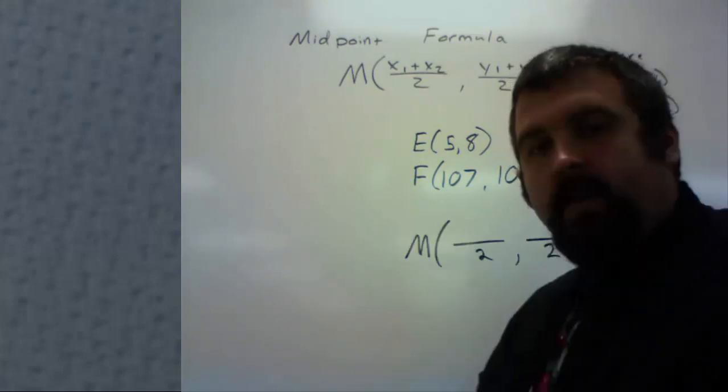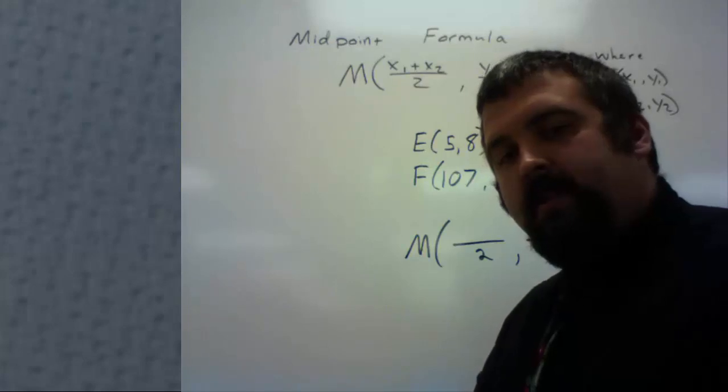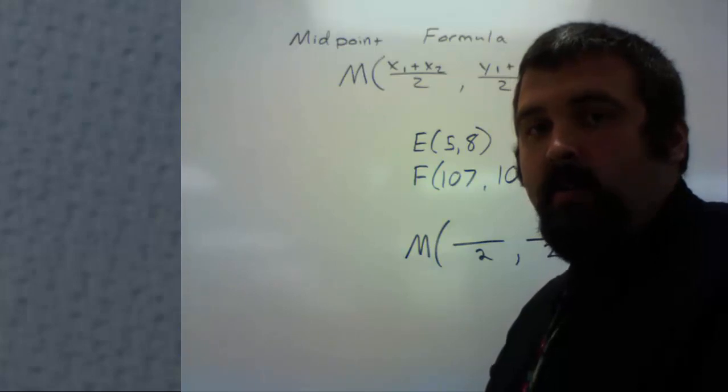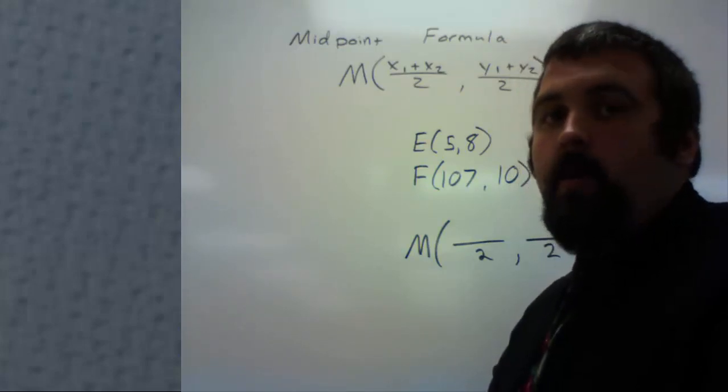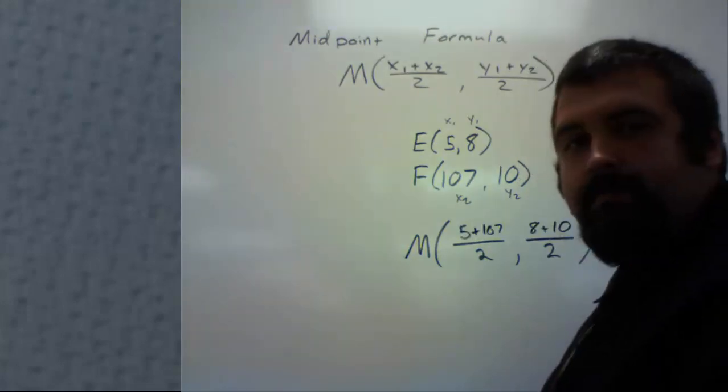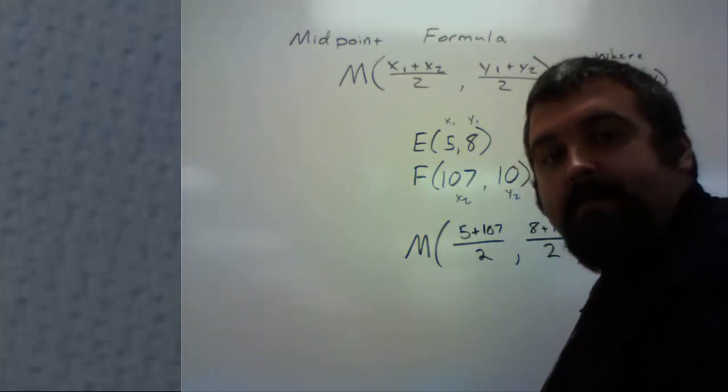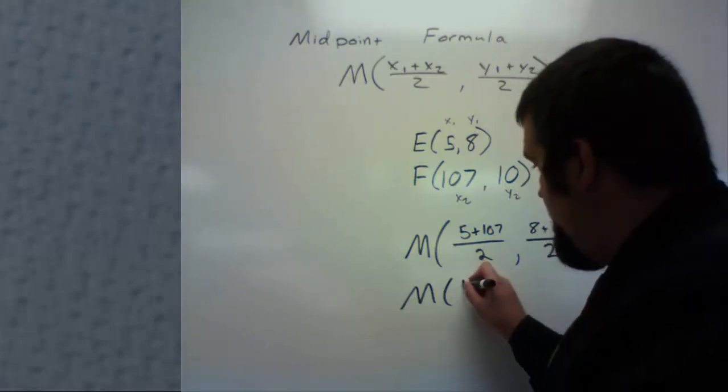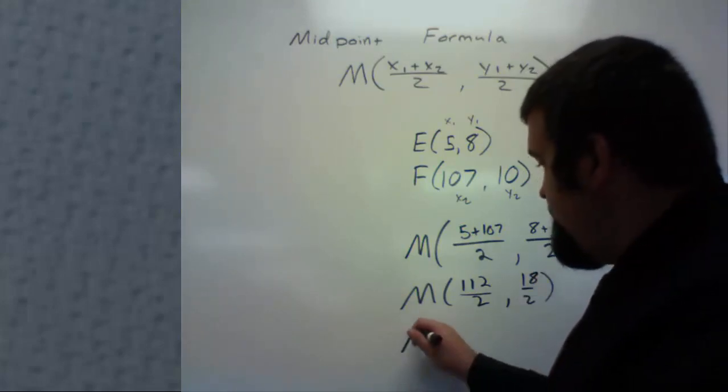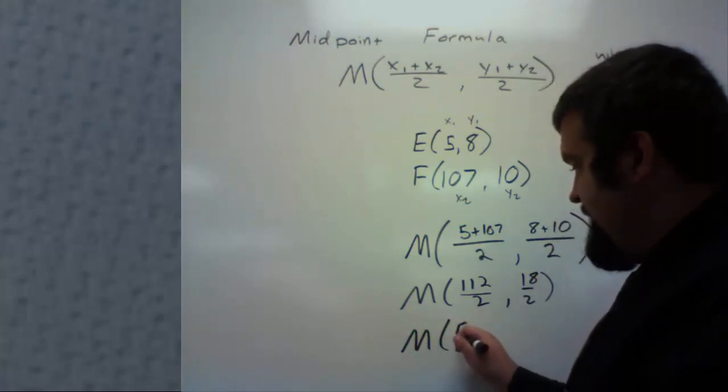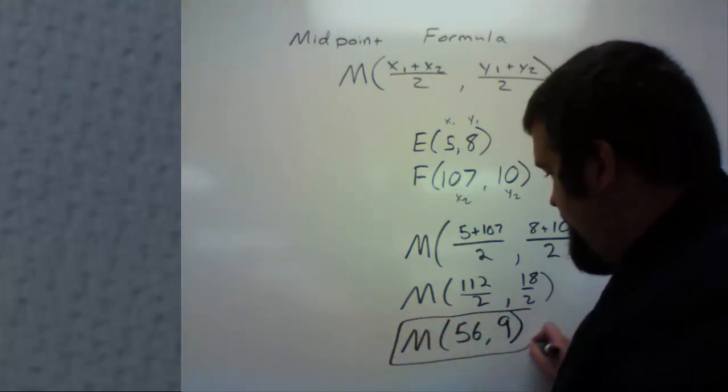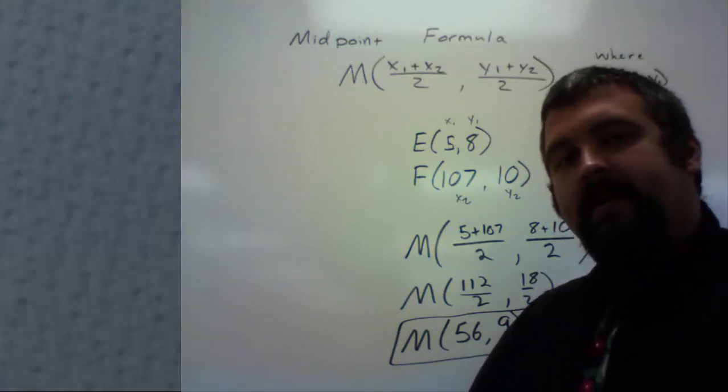So it doesn't matter which one I choose as X1 and Y1. I just have to be consistent. So I'm going to choose E to be X1, Y1, and F to be X2, Y2. I wrote it in just to be safe, so that way I won't get confused later and forget. Now I just simplify my midpoint. 5 plus 107 is 112. 8 plus 10 is 18. And 112 divided by 2 is going to be 56. 18 divided by 2 is 9. So the midpoint of these two would be 56, 9.